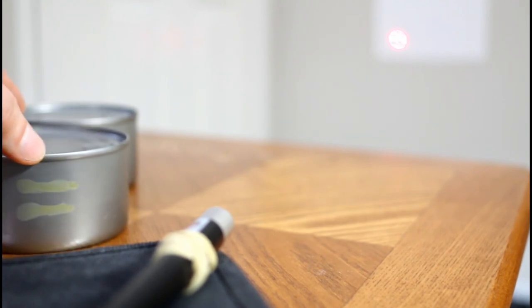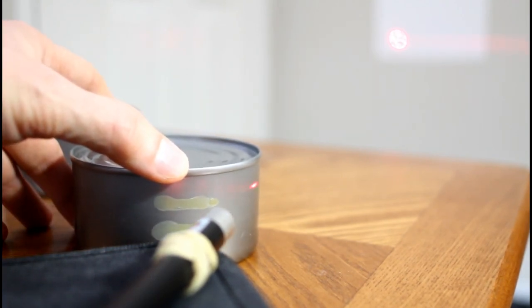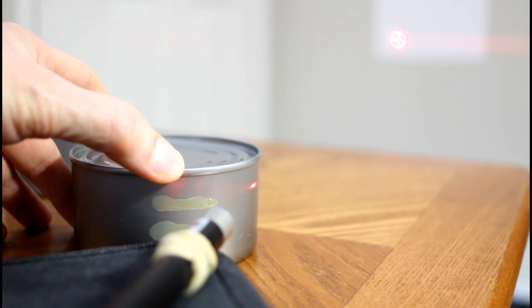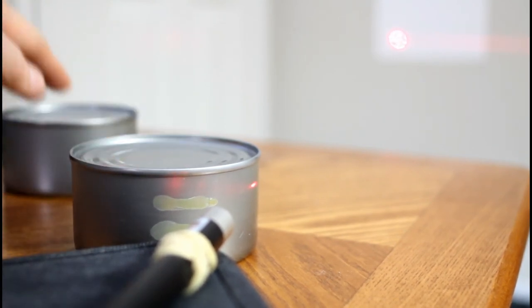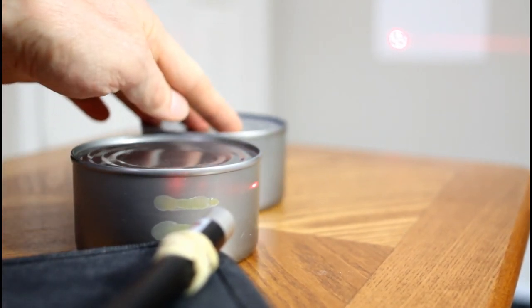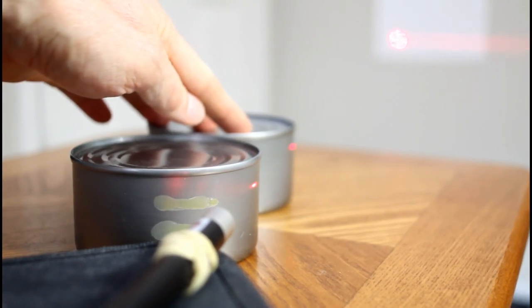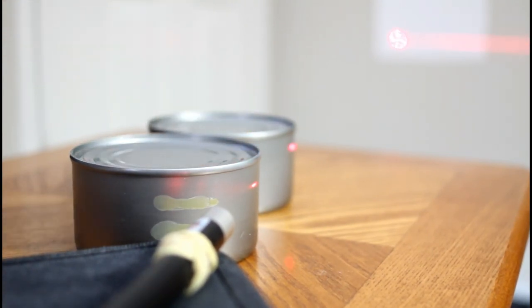Two cans of tuna fish can also be used with the paper removed. Move the first can in about a third of the way into the beam, and then move the second can in, and the diffraction pattern should show up.